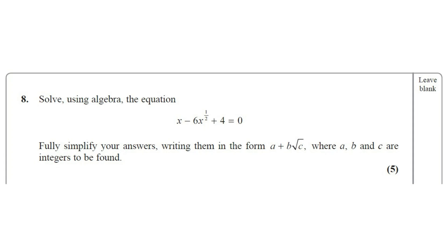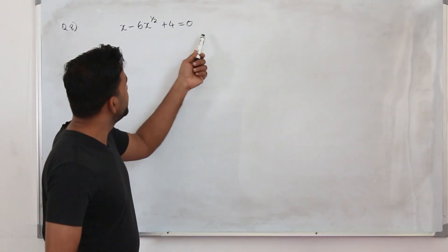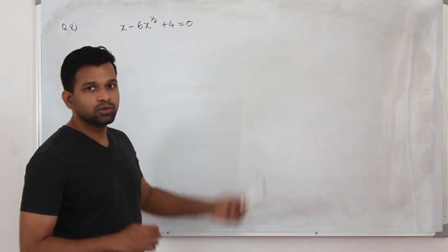Question number eight: solve using algebra the equation x minus 6x to the power half plus 4 equals zero. Fully simplify your answers, writing them in the form a plus b root of c, where a, b, c are integers to be found. This question has five marks. You are given this equation and they want you to solve it.